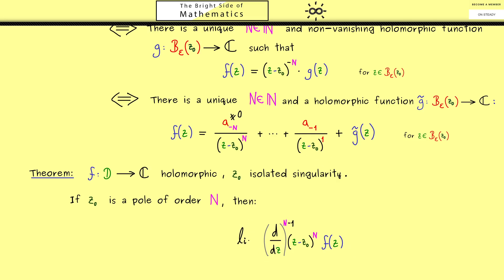Looking at this formula, everything vanishes except the term containing a_{−1}, because that is exactly the term differentiated the right number of times so that (z − z0) vanishes completely. The constant a_{−1} remains while all other parts go to 0. However, differentiating N−1 times brings down exponents, so we must divide by (N−1)! to recover a_{−1}. This proves the calculation rule: the residue of f at z0 equals the result of this formula.